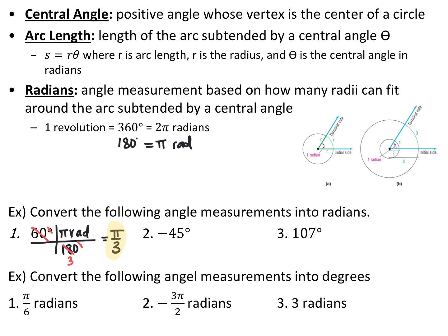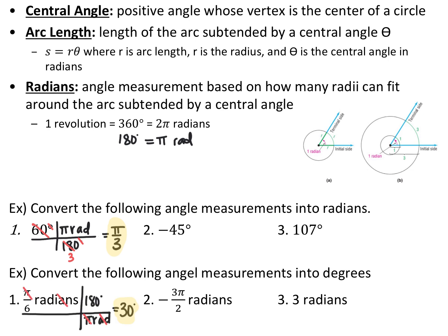If you write just pi over 3, it's implied that it's radians. Going the other direction, to convert pi over 6 radians into degrees, multiply by 180 degrees over pi radians. The pi's cancel and you end up with 30 degrees. Make sure when your answer is in degrees you write the degree symbol, because if you don't, it implies radians.